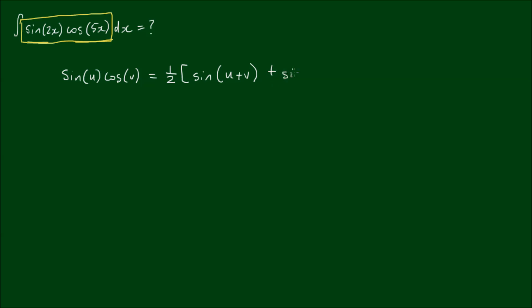So that means we can express the sine of 2x by the cosine of 5x as being equal to a half by the sine of 2x plus 5x plus the sine of 2x minus 5x. And if we simplify that, we will get a half by the sine of 7x plus the sine of negative 3x.